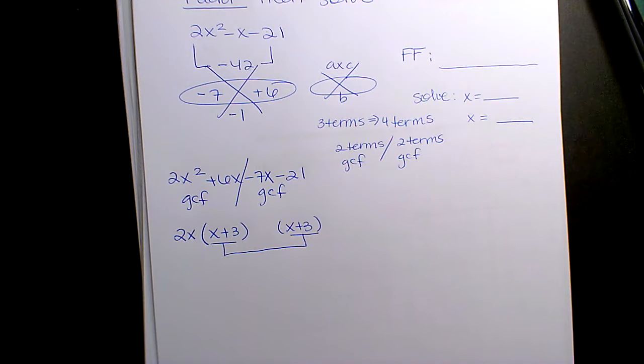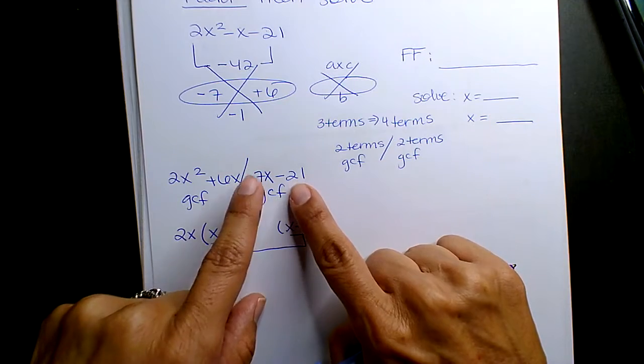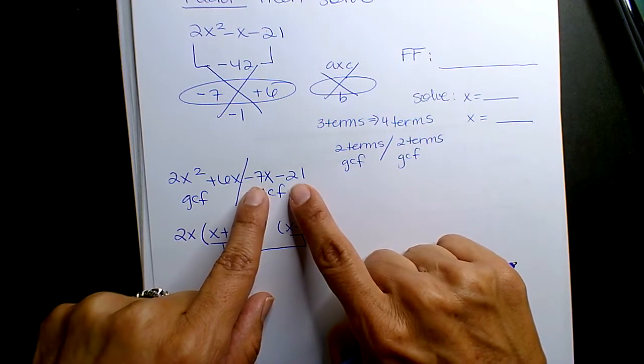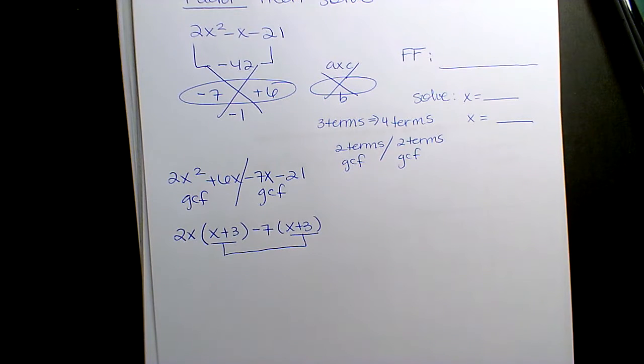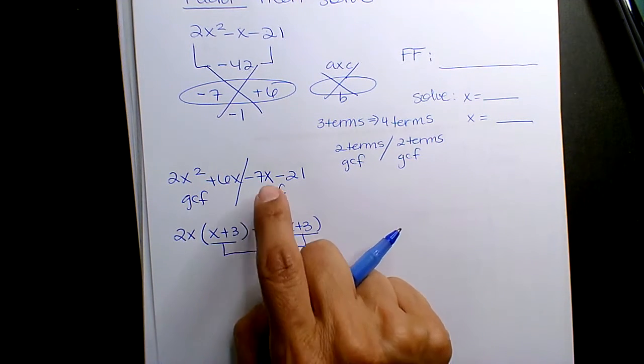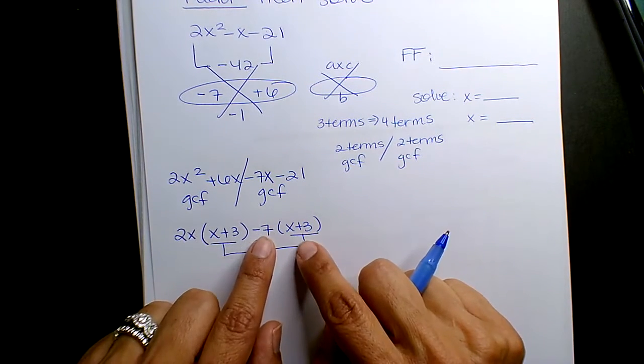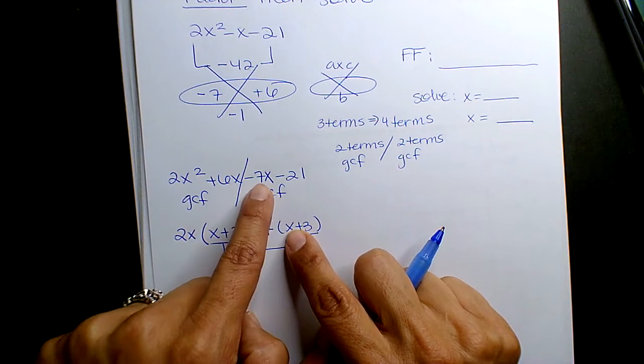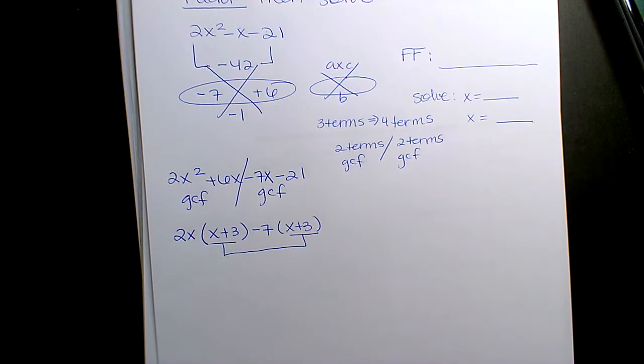Okay, and so if I look at negative 7x minus 21, what can I factor out in terms of negative 7 and negative 21? A negative 7. If this term here is negative, pull it out, always. And then what's divisible into 7 and 21? 7, and so double check. Negative 7 times x is negative 7x. Negative 7 times 3 is negative 21. So you could always verify your work in the distributive property.